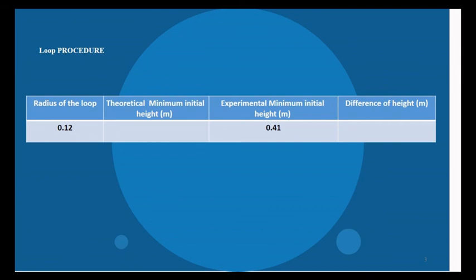Calculate the theoretical minimum height from which the car can be released on the left end of the track so the car will just make it completely over the loop.